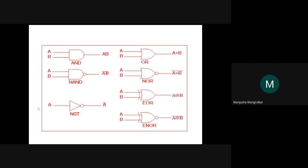Summary of all gates: NOT gate: output is A complement. AND gate: output is AB. OR gate: C equals A plus B. NAND gate: AB complement. NOR gate: A plus B complement. XOR and XNOR are also summarized.